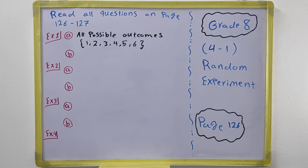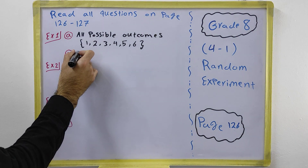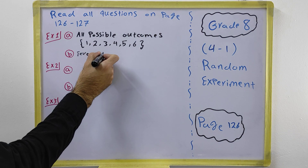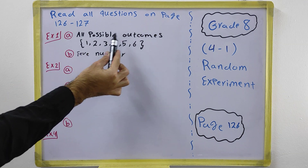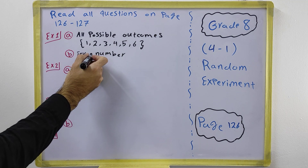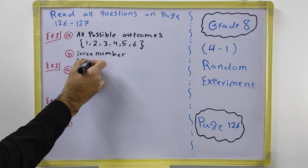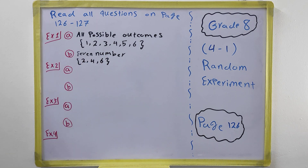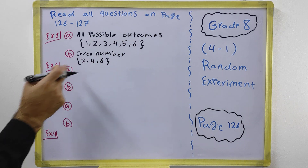Part B tells you to list the outcomes of the event that an even number occurs. We are talking about the same number cube from Example 1, which can give one, two, three, four, five, or six. The even numbers in a number cube are two, four, and six — we have three different even numbers. Among all possible outcomes, the even numbers are two, four, and six.